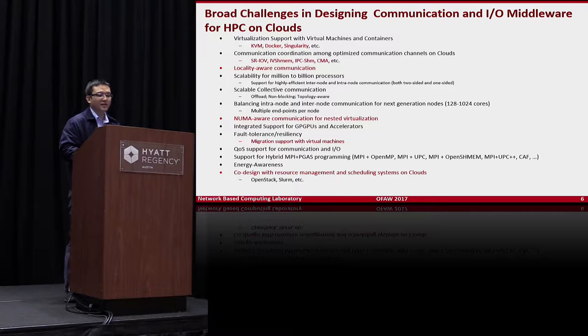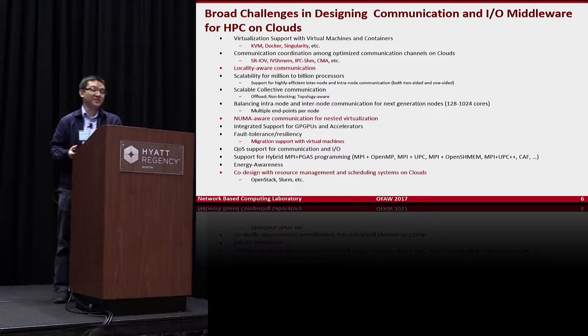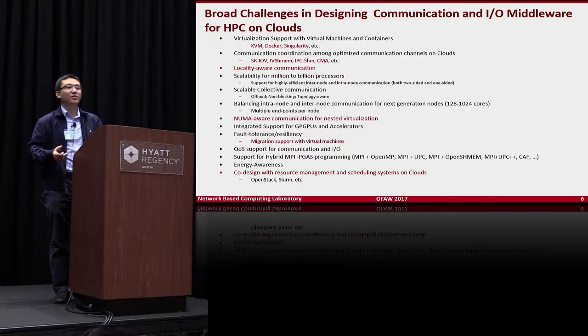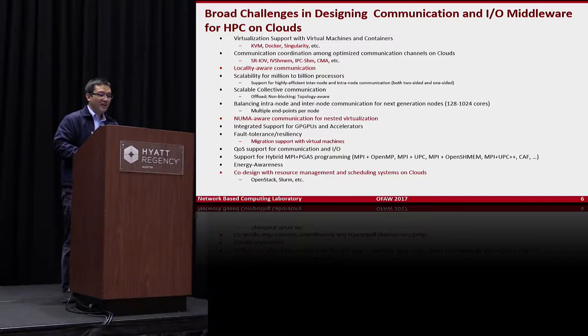Another important challenge is new middleware communication for nested virtualization. Nowadays in many environments, people use nested virtualization: software packaged in Docker or Singularity instances is deployed on infrastructure that provides virtual machines. So you run Docker or Singularity images on top of virtual machines — a two-layer virtualization — which gives even worse performance compared with native. That's another big challenge.